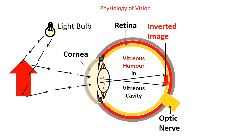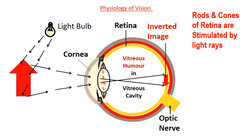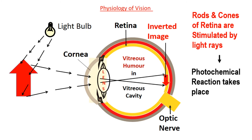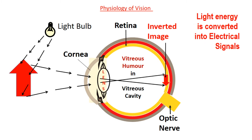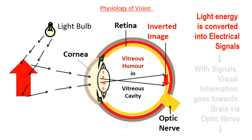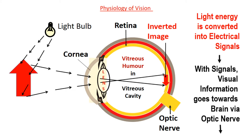On the retina, an image of the object is formed but it is upside down or reversed. You must be wondering why upside down — we do not see anything like that. It's because the light rays go in opposite directions behind the lens, so the image is inverted. But we do not see it inverted because the visual process has just started and we haven't seen anything as yet. The rods and cone cells, also called photoreceptors, are stimulated by these light rays. Then a photochemical reaction takes place, followed by some biochemical reaction. As a result of these reactions, the light energy is converted into electrical energy or signals. With these signals, visual information goes towards the brain via the optic nerve.